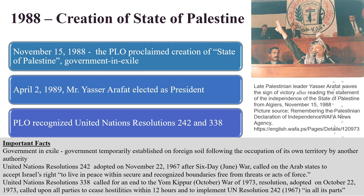UN Resolution 242, adopted on November 22, 1967 after the Six-Day War, called on the Arab states to accept Israel's right to live in peace within secure and recognized boundaries, free from threats or acts of force. UN Resolution 338 called for an end to the Yom Kippur War of 1973. The resolution was adopted on October 22, 1973, and it called upon all parties to cease hostilities within 12 hours and to implement UN Resolution 242 in all its parts.